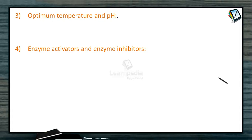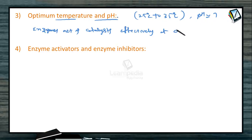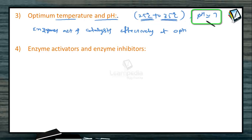Another characteristic is temperature and pH conditions. Enzymes act as catalysts at optimum temperature and pH levels. The temperature should be 25 to 35 degrees, which is our body temperature, and the pH is approximately 7. At these optimum conditions, enzymes act as catalysts effectively.